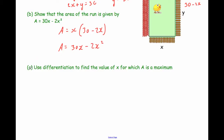Part C says use differentiation to find the value of X for which A is a maximum. We know that maxima or minima happen whenever dy/dx equals zero, i.e., at a turning point. We have A equals 30X subtract 2X squared — it's a negative X squared, so it's an n-shaped quadratic and we'll have a maximum. We're going to differentiate A, so instead of dy/dx we write dA/dx because we're differentiating A with respect to X.